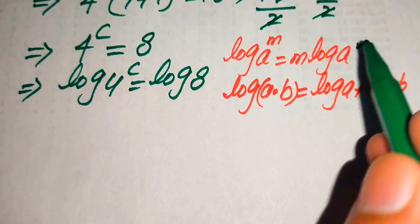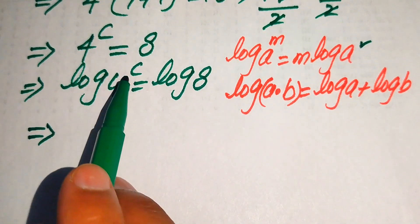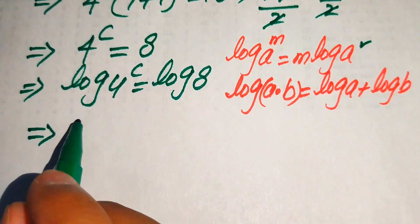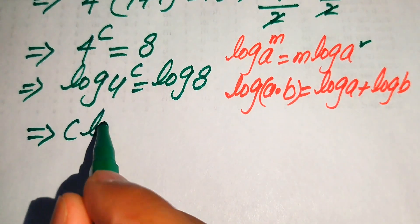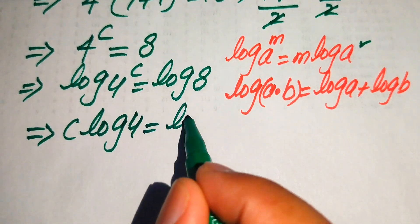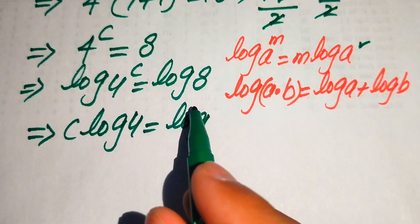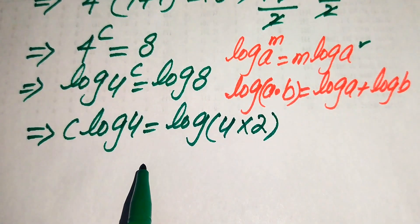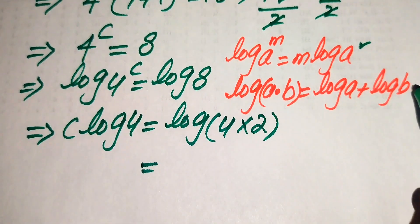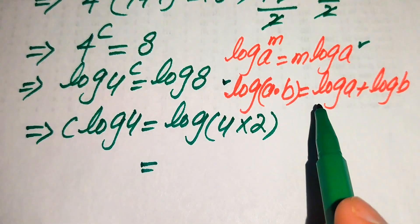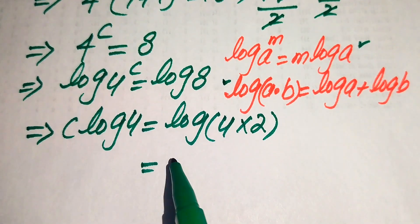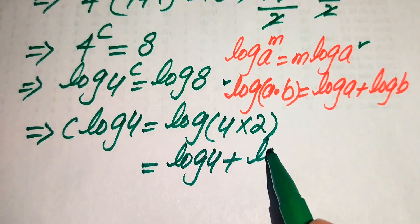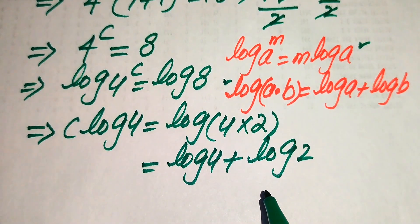Applying the power rule on the left-hand side, we move c to the front of the log, giving us c times log 4. On the right-hand side, we write 8 as 4 multiplied by 2, then apply the product rule to get log 4 plus log 2.